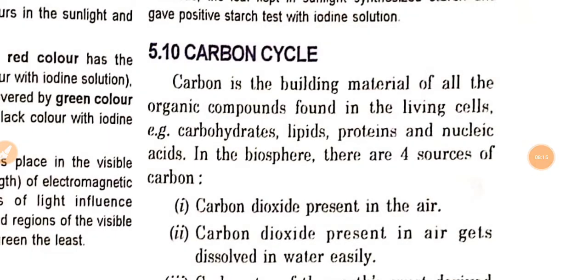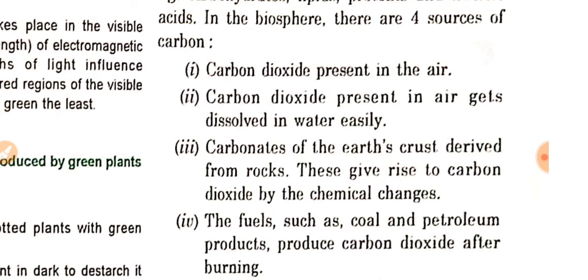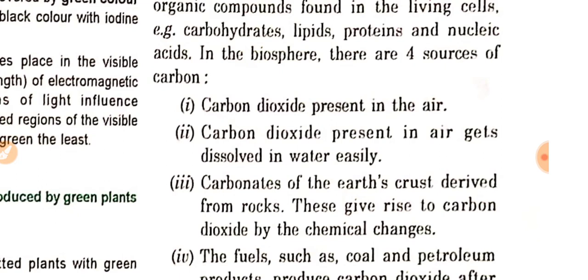In next class, students, we read about the carbon cycle. As you understand from the term cycle, it comes to its original forms by connecting in different forms. Carbon is the building material of all the organic compounds found in the living cells—the carbohydrates in the form of lipids, proteins, and nucleic acids. In the biosphere, there are four sources of carbon. First is carbon dioxide present in air. Second, carbon dioxide present in air gets dissolved in water easily. Next, carbonates of earth's crust derived from rocks. These give rise to carbon dioxide by chemical changes. The fuels such as coal and petroleum products produce carbon dioxide after burning. These are the different sources of carbon in the earth.